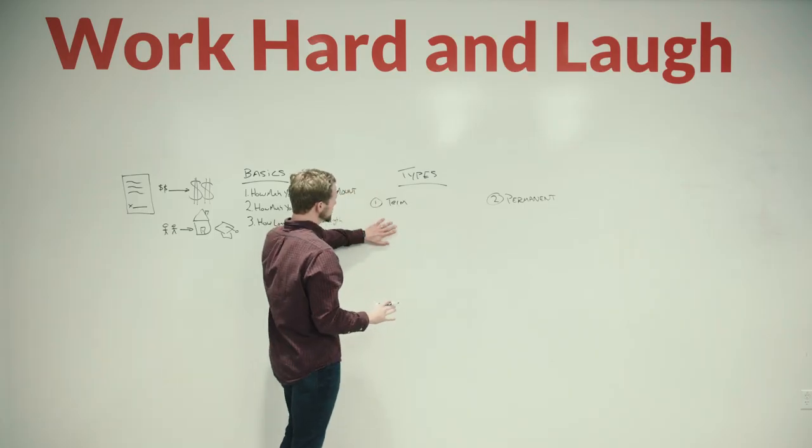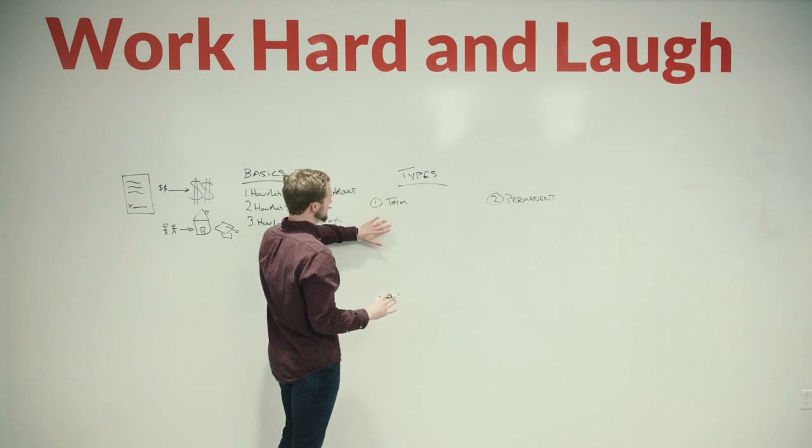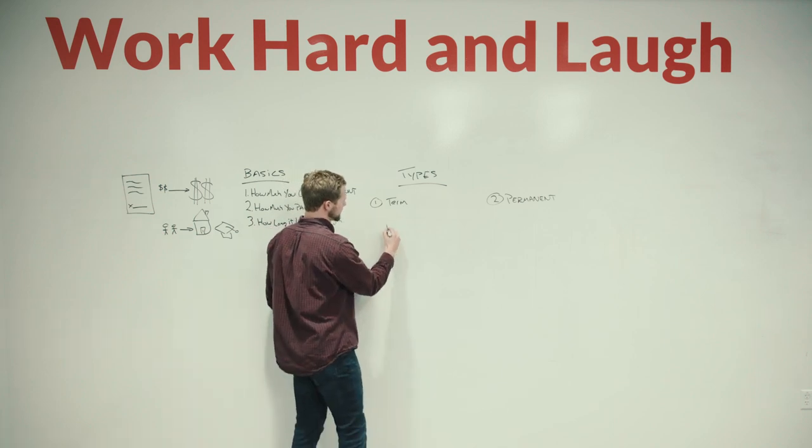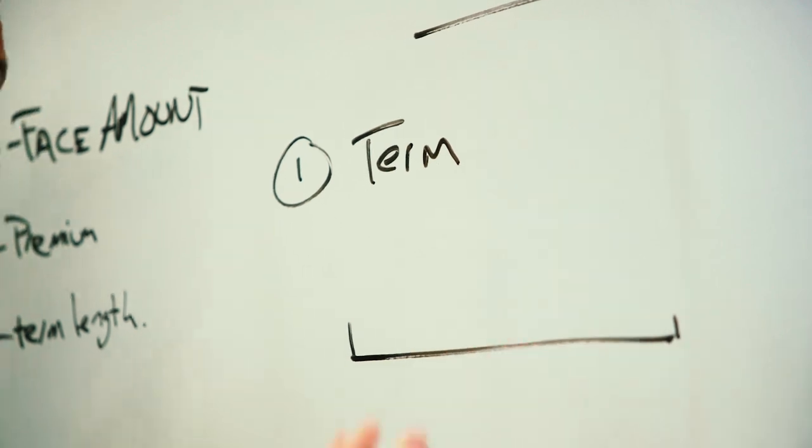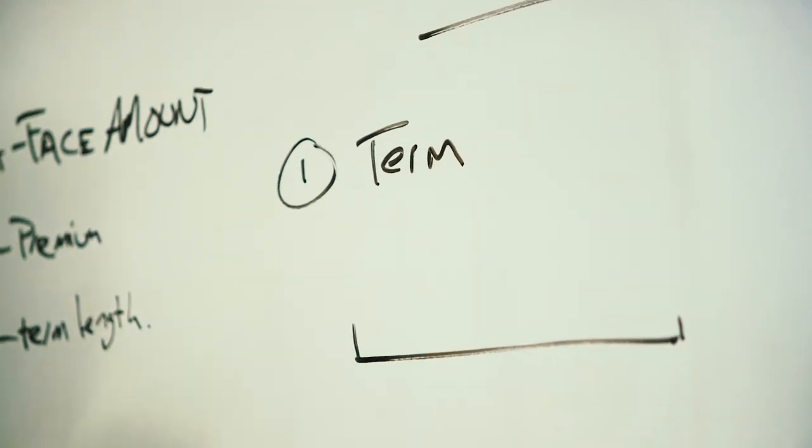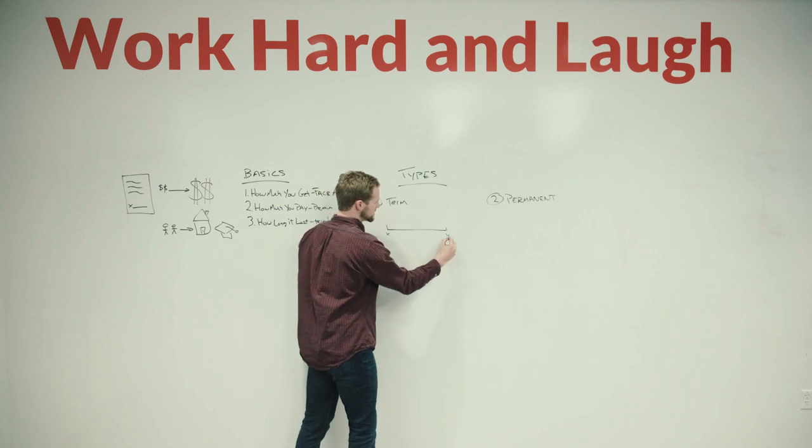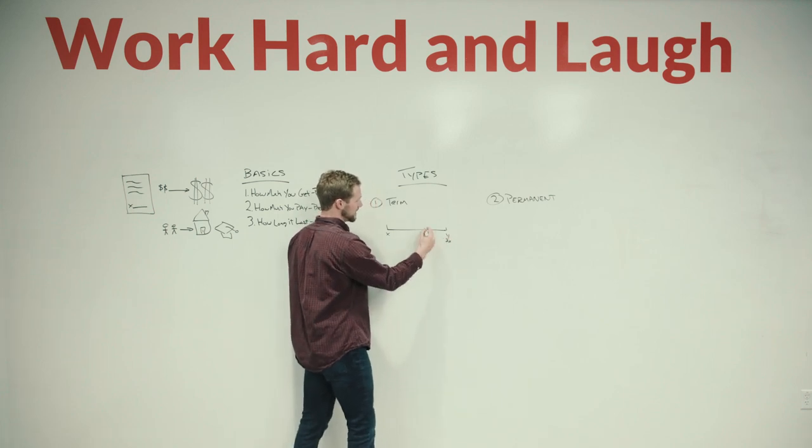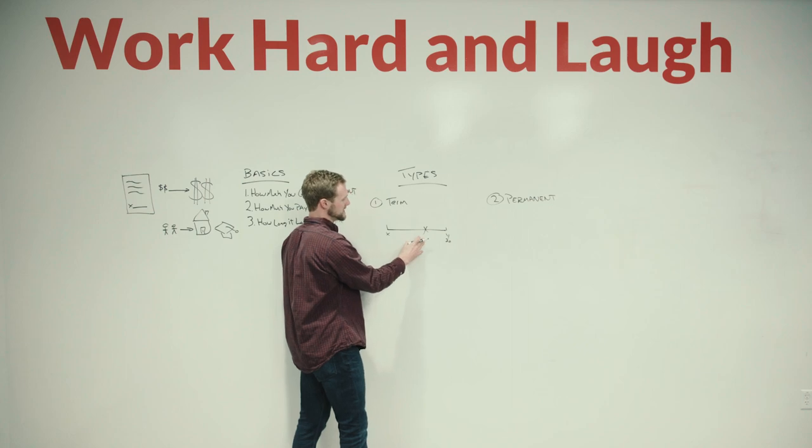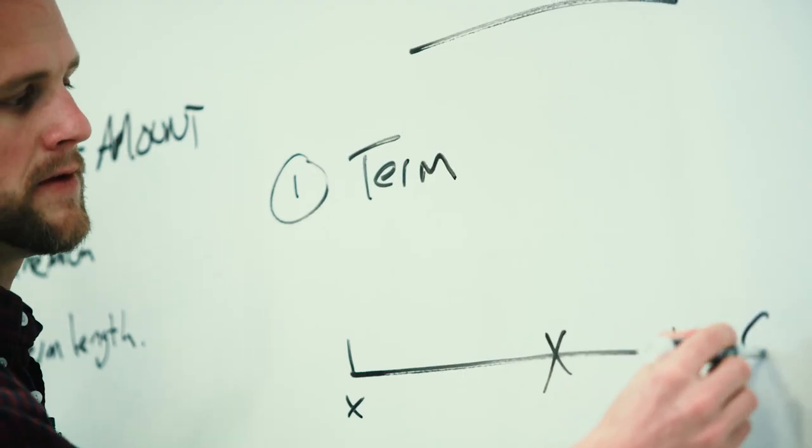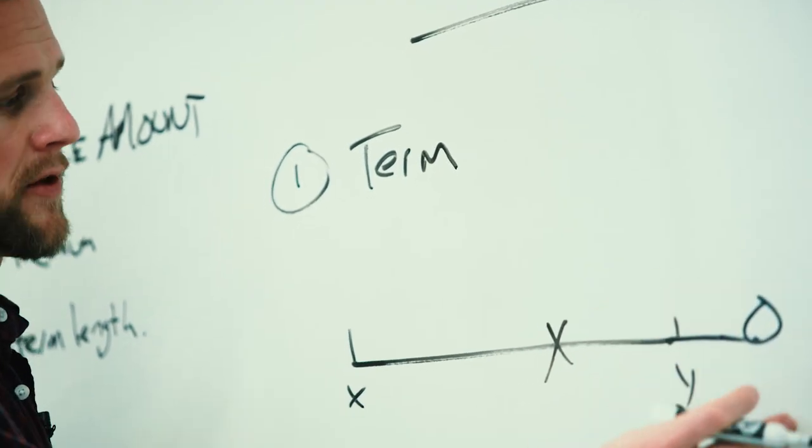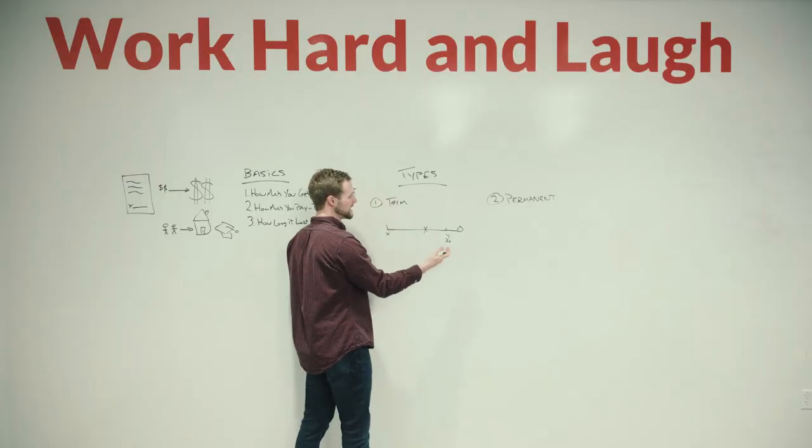So starting with term, term life insurance is a type of policy that lasts for a specific duration, maybe 10 years, 20 years, 30 years. And if you die between that period, let's say in this case, before the 30th year, if you die in here, your family will receive that benefit. However, if you die out here in year 35, year 31, your family will get nothing.